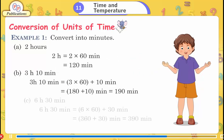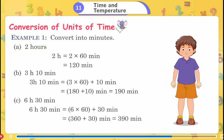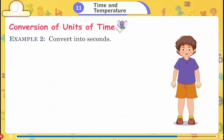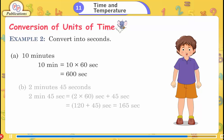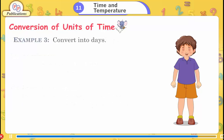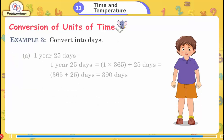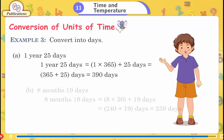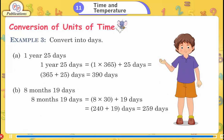Example 1: Convert to minutes. Example 2: Convert to seconds. Example 3: Convert to days. Week multiplied by 7 gives days.